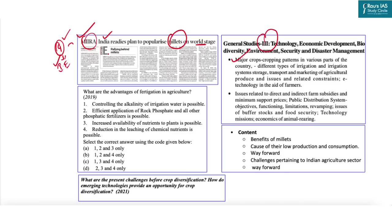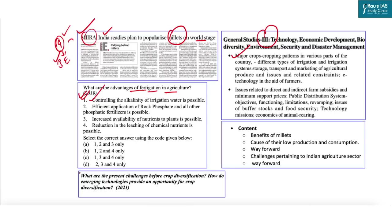From a GS Paper 3 perspective, agriculture and allied sectors is a prominent theme for both Prelims and Mains. In 2019, UPSC asked a question on advantages of fertigation in agriculture — try to attempt that and let us know in the comments. In 2021, Mains asked about challenges pertaining to crop diversification. In this discussion we'll look at the benefits of millets, causes of their low production and consumption, futuristic conclusions, challenges in Indian agriculture, and a way ahead.